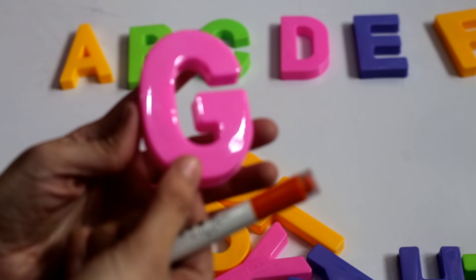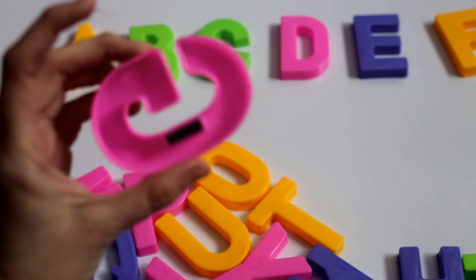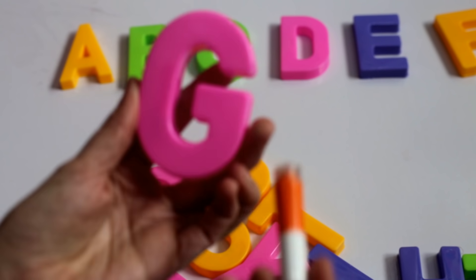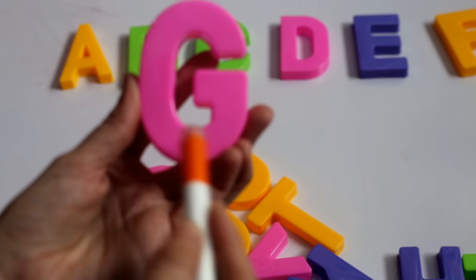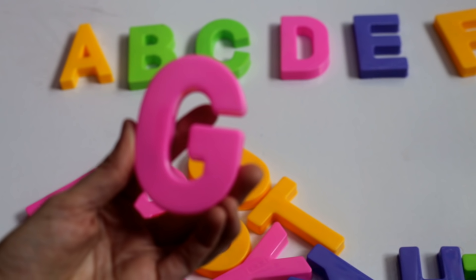This is G. It's a magnetic alphabet. G. This is G. Here is G.